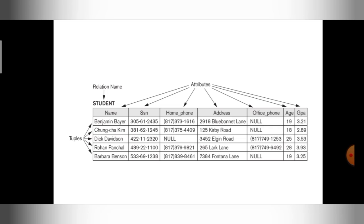In simple words, in DBMS a relation can be called as a table. The table will have a name — that can be called as a relation name. So each relation will have a name. Here in this example, my relation is a student relation, meaning the student table contains the data of particular students.